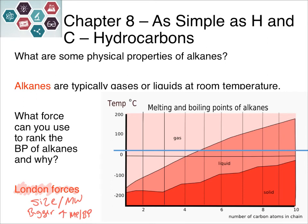The bigger the molecule, the higher the melting point and boiling point. Looking at a graph with the number of carbons on the bottom axis: at two carbons, the melting point is around negative 200°C and the boiling point is around negative 100°C. The blue line represents approximately room temperature. At C3 and C4, the alkane is a gas at room temperature; C5 is just into the liquid phase; and C6 through C10 remain liquids at room temperature, with both melting and boiling points increasing as carbon count increases.